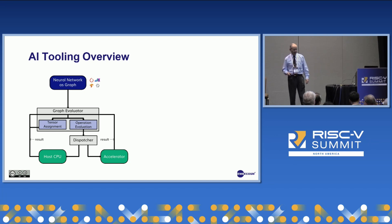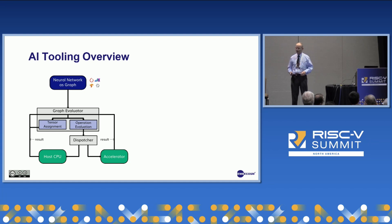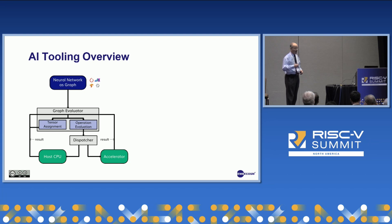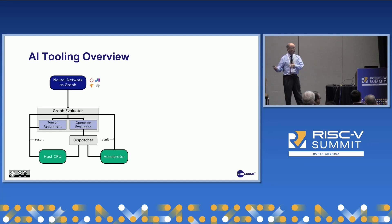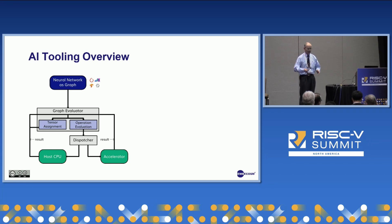You have a simple graph evaluator that has to worry about two things: where are the arguments — the tensors, essentially large matrices — and what are the operations you want to do on the tensor, which can be very simple like an add, or can be more complex like a full convolution. The graph evaluator has a dispatcher, and it's going to decide whether to execute that particular operation on either the host CPU or on an accelerator. These AI systems all have the view of there's a host controlling everything, and an accelerator doing all the heavy lifting.